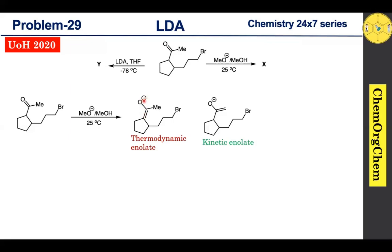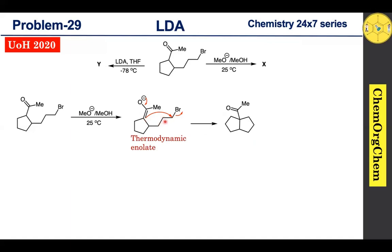After the formation of thermodynamic enolate, you see this electron readily shifts here, then this electron attacks this carbon, which kicks off the Br minus ion, resulting in this corresponding ketone as the final product. What happens here is intramolecular alkylation takes place to produce this corresponding product.